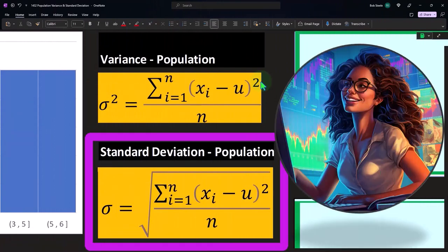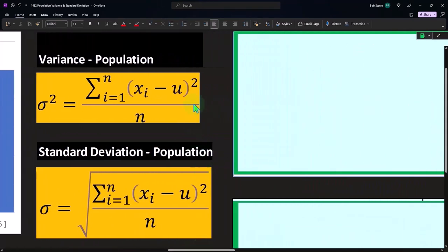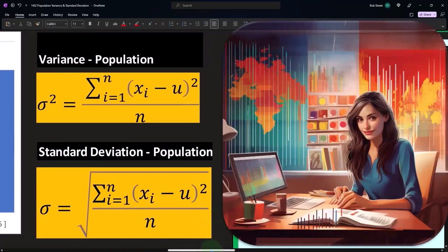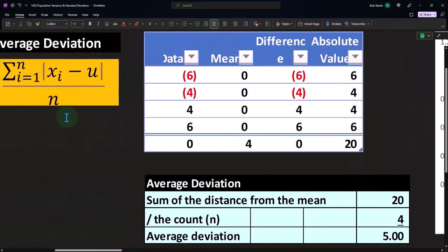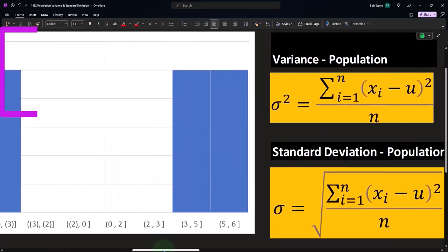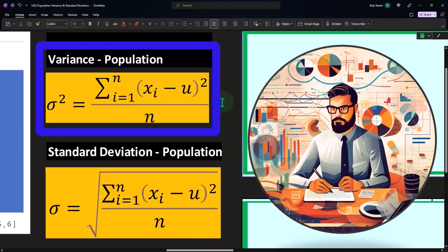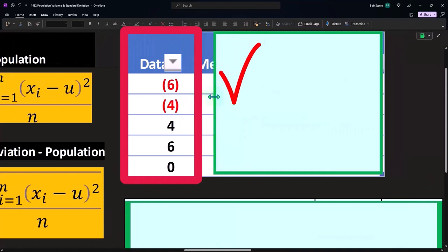Note the squaring does have that capacity of getting rid of the negative numbers, and then you take the square root and you get to a similar point, but it's not exactly the same. You can compare and contrast the intuitive approach with the average deviation versus the variance and the standard deviation.